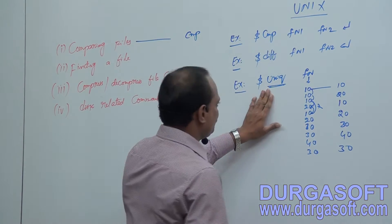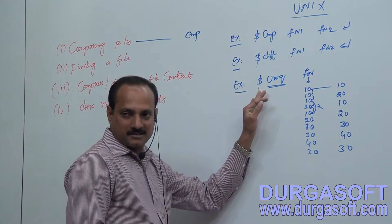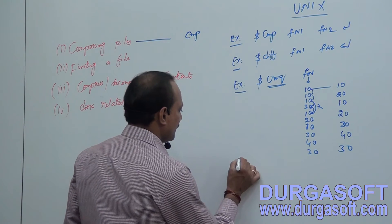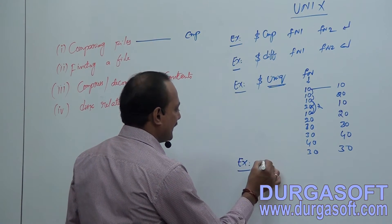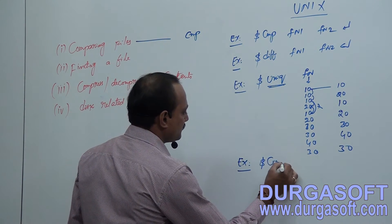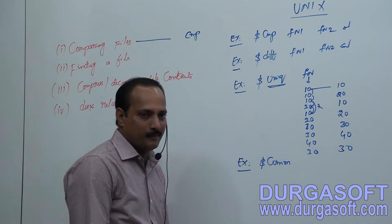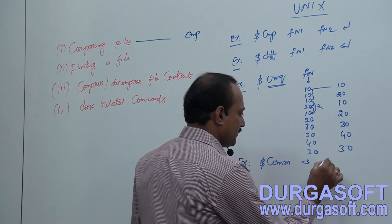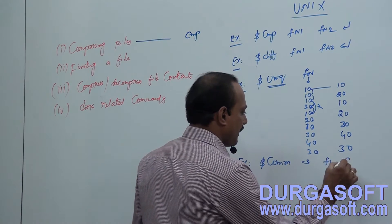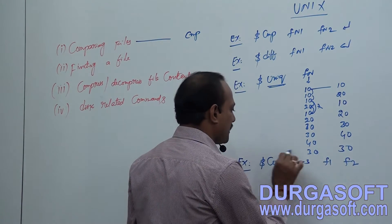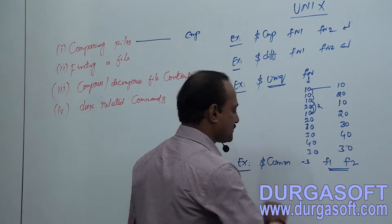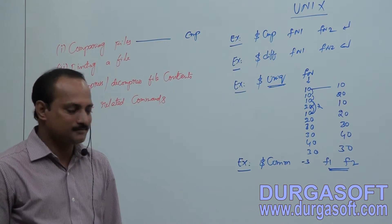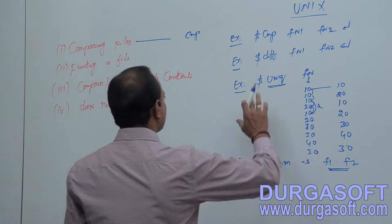If you want to see common lines from two files, use the comm command. The syntax is: comm filename1 filename2. It will display only the common lines present in both files.